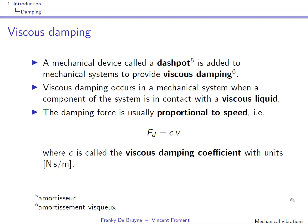A dashpot is a mechanical device added to a mechanical system to add damping, and it's called viscous damping. Viscous damping occurs when a component of the system is in contact with a viscous liquid. The damping force produced is usually proportional to speed: Fd = c·v. Force is in Newton, speed is in meters per second, so the viscous damping coefficient has units of Newton times seconds divided by meters.